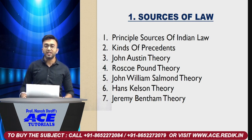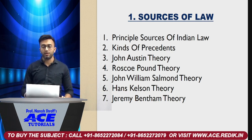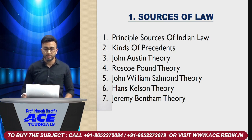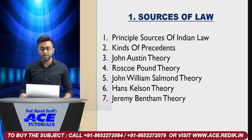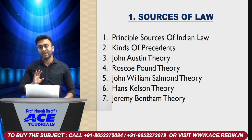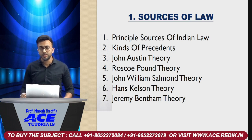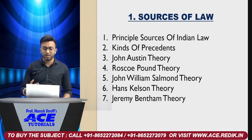These five theories will confirm that they will come in the exam — this is my guarantee. The five theories are: John Austin's theory, Roscoe Pound's theory, John William Salmon's theory, Hans Kelsen's theory, and Jeremy Bentham's theory. These five theories will definitely come in the JIGL paper. In fact, the last two times the Roscoe Pound theory appeared in the exam, so you will know that all five theories are important.